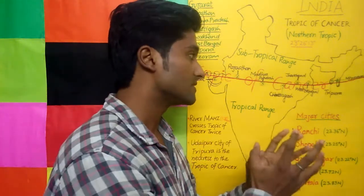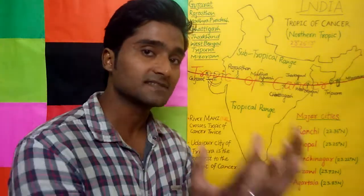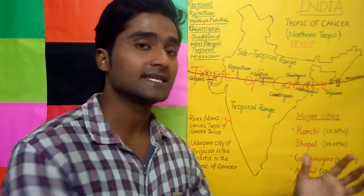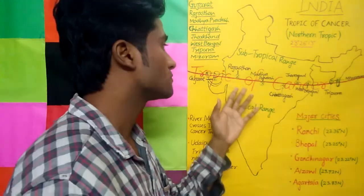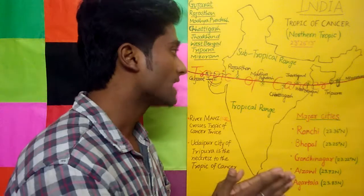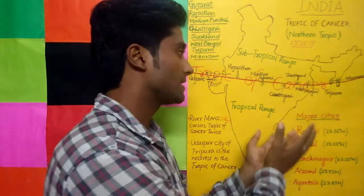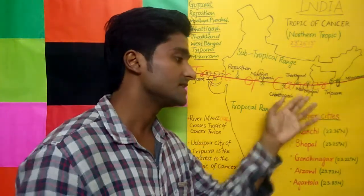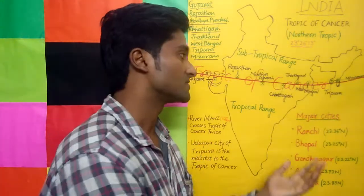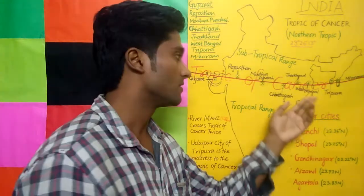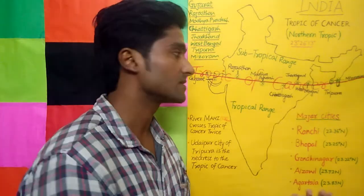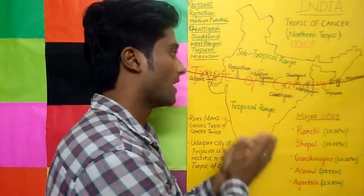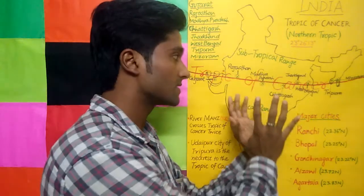Udaipur city is the nearest city to the Tropic of Cancer — and here I'm referring to New Udaipur city in Tripura, not the Udaipur city of Rajasthan. Also, do you know the place called Mayapur? Mayapur is a city in the Nadia district of West Bengal, a famous holy city associated with Lord Chaitanya, and it is also near the Tropic of Cancer.